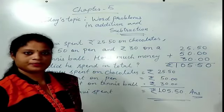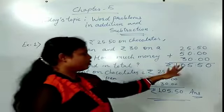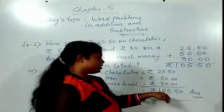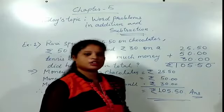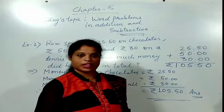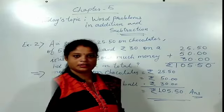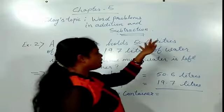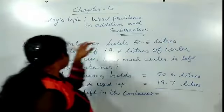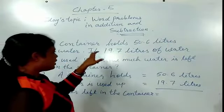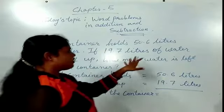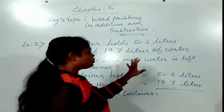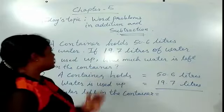Understood? What you have to do — you have to do addition. After addition you got rupees 105.50. We will take one more example.